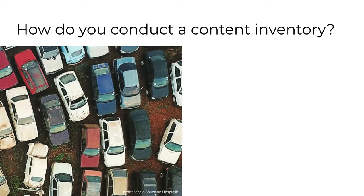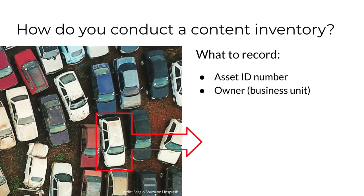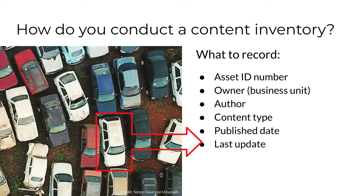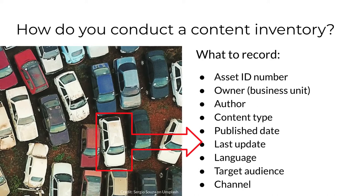At a minimum, you're going to want to assign an ID number. If content is a valuable asset, every content asset should have a unique number that can be used by everyone to manage it throughout its lifecycle within the business. You should capture which business unit owns a piece of content and the author if you can. It will be helpful to enter the type of content — like news item, blog post, biography — and also important dates like the date of initial publication or of the last update. If you have content in multiple languages, entering the language of each asset would be critical. Your decisions about details should be driven by your goals and the amount of time you can afford to spend collecting information.